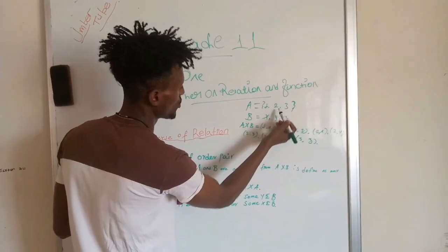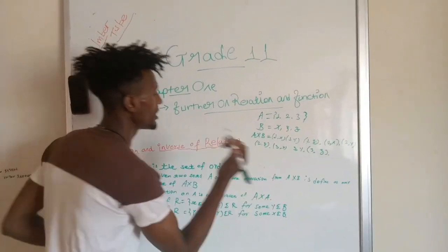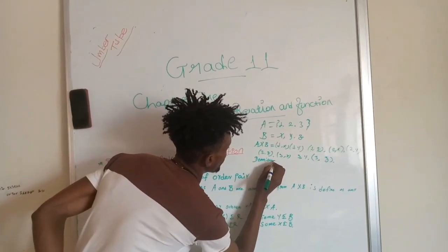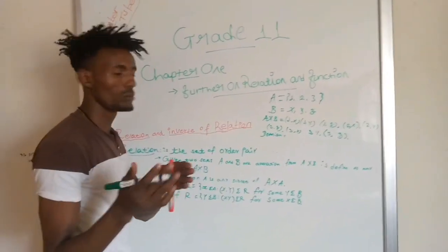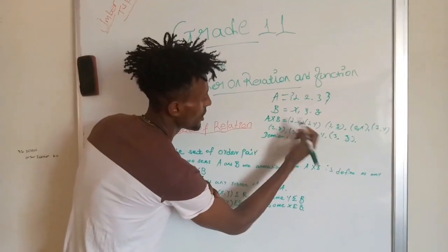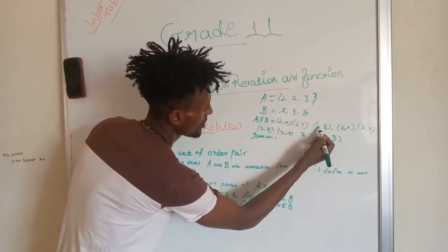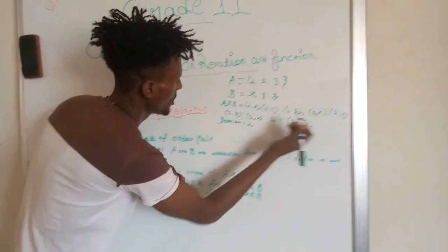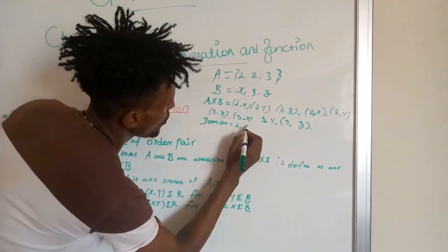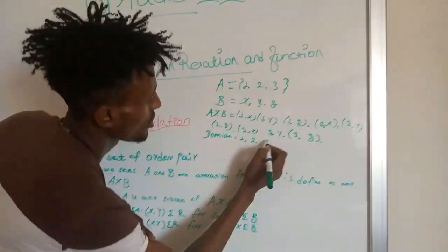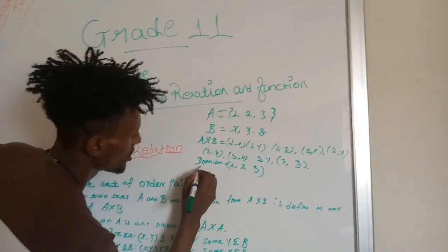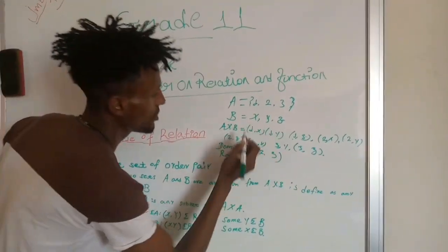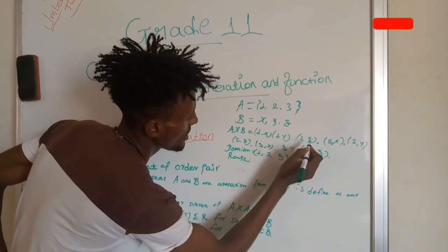The domain is the first element of each ordered pair. The range, or second element, consists of X, Y, and Z.